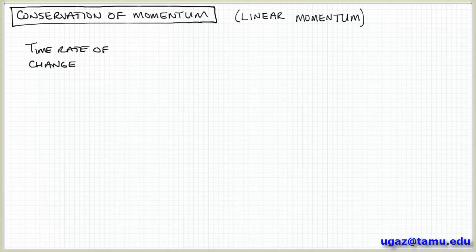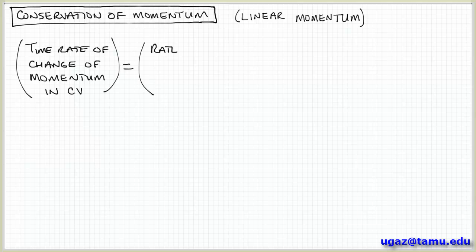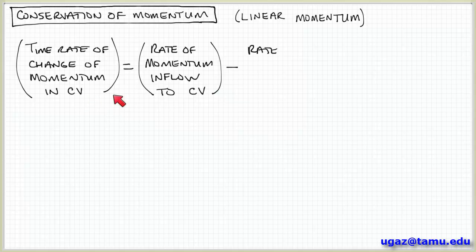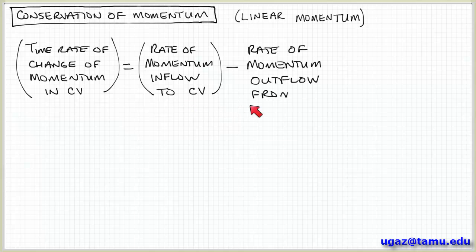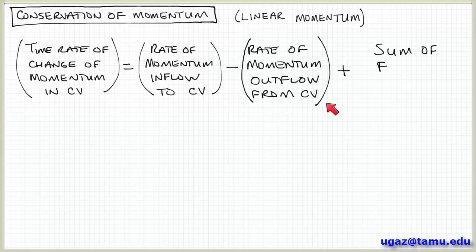Going back to the definition of a conservation law, we can apply that general definition to the case of linear momentum. We can state that the rate of change of momentum in a control volume (CV) is equal to the rate of inflow of momentum into the control volume, minus the rate of outflow of momentum away from the control volume, plus the sum of the forces acting on the control volume.